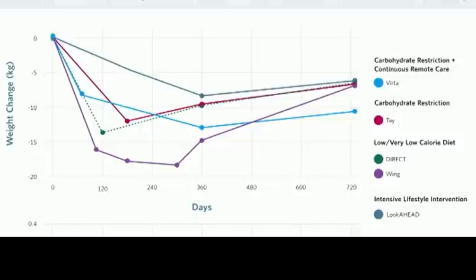Some of them were very calorie-restricted diets. So the green line here that goes up to there to there, that's called the Direct study. That was published in the Lancet a couple of years ago. This is a roughly 850-calorie formula diet to treat people with early-stage diabetes.